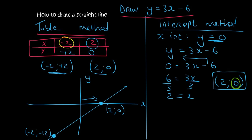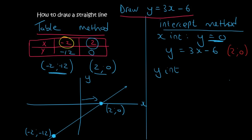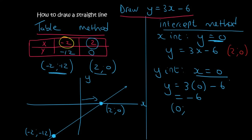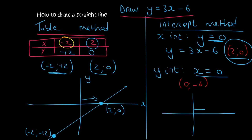Then we need to find our y-intercept. To do that, we make x equal to 0. We take the equation and make x equal to 0, and that's going to give us minus 6. So when x is 0, y is minus 6. There we have our two points: x is 2 and y is 0 — that dot is on the x-axis. And x is 0, y is minus 6 — that dot goes down below the origin. We can then put a line through those points and label them: 2 comma 0, and 0 comma minus 6.